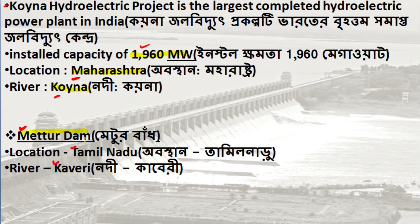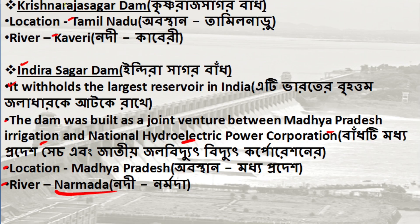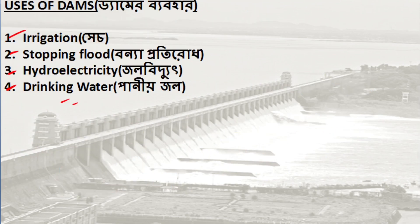Mettur Dam is in Tamil Nadu. Indira Sagar Dam is India's largest reservoir, built as a joint venture of Madhya Pradesh and the Indian national government on the Narmada river. Its purposes include irrigation, flood control, hydroelectricity, and drinking water.